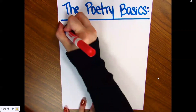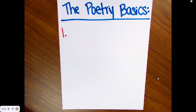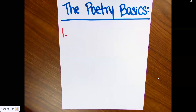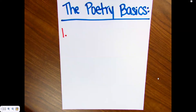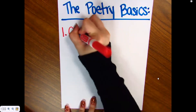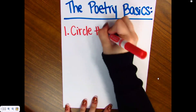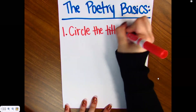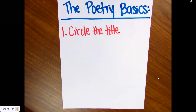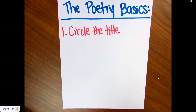So, with my poetry basics, the first thing I want to do is number my lines and stanzas. Actually, let's rewind. The first thing I want to do is circle my title, okay? We'll do that first. First, we're going to circle the title — super easy, circle the title. Then, we're going to number the lines and stanzas.